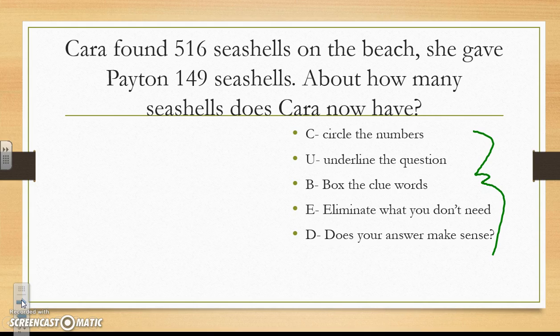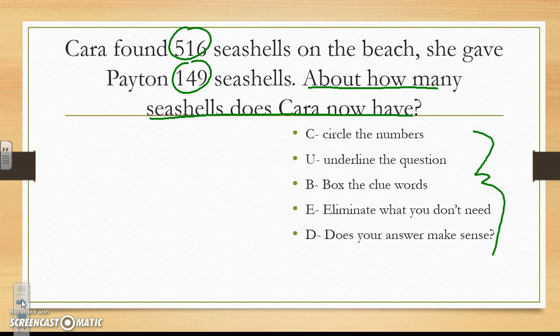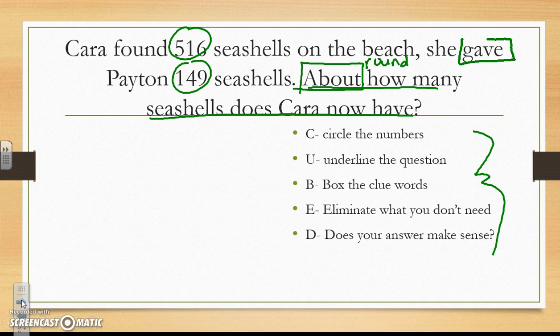Kara found 516 seashells on the beach and she gave Peyton 149 seashells. About how many seashells does Kara now have? First, I am going to circle the numbers using my CUBE strategy. I am going to underline the question: 'About how many seashells does Kara have now?' I am going to box the clue words. 'About' is a clue word because that tells me to round, and 'gave away' is also a clue word because that means to subtract.